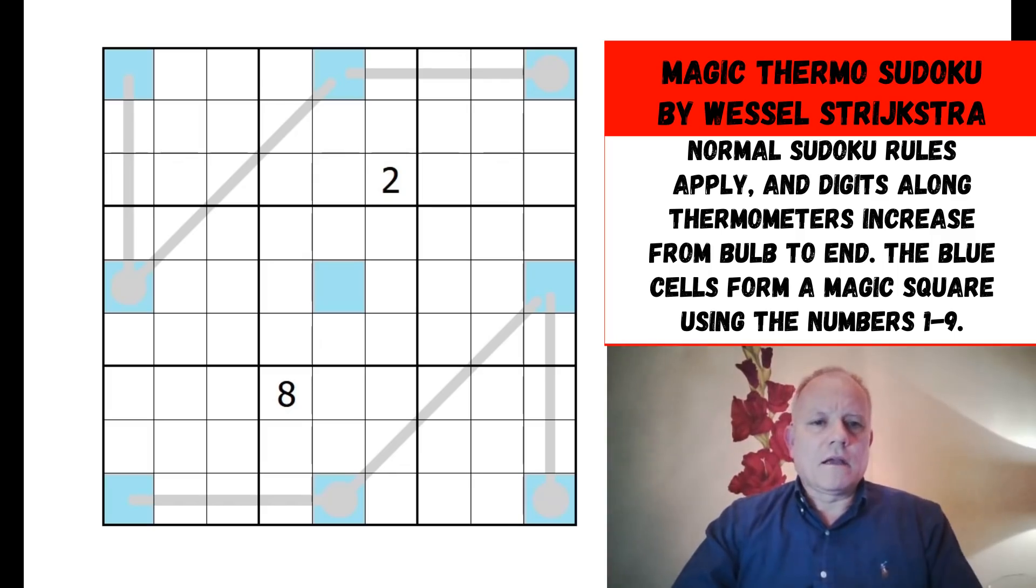I normally like to start with the longest thermometer but I think here we start with the magic square. We can always put a 5 in the middle, and if we remember our magic square theory, the numbers orthogonally connected to the 5, which in this case are these highlighted cells, are odd with 1 opposite 9 and 3 opposite 7. Obviously the ones on the ends of the thermometers must be 9 and 7 and the ones on the bulbs of the thermometers must be 1 and 3.